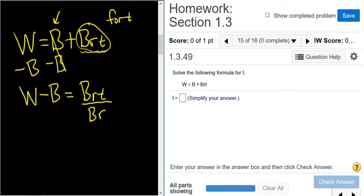So you just divide by b and r, by everything else. And here you just divide by b and r. Boom, he's canceled. So you get w minus b over br, and that's equal to t.